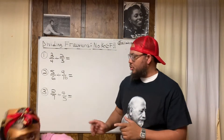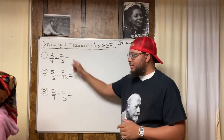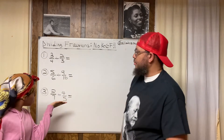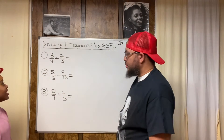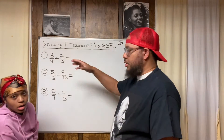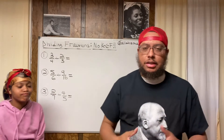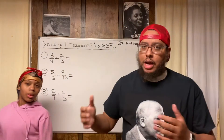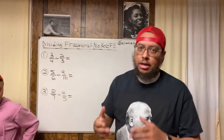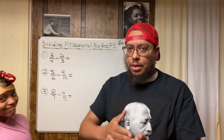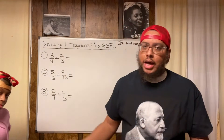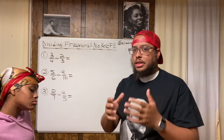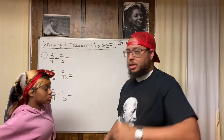Asada, read number one out loud. Number one: three-fourths divided by two-thirds. Now, I like to make sure you have a conceptual understanding of what's actually happening with division. When I was much younger I had an algorithmic and procedural understanding — I knew the steps and how to get to the right answer, but I didn't know why it was the right answer. I wasn't taught that.